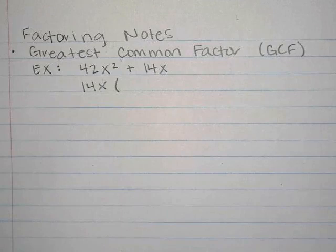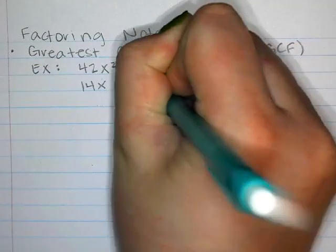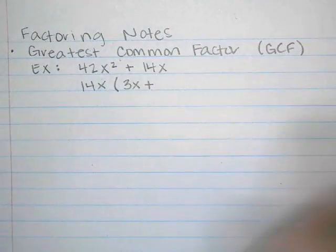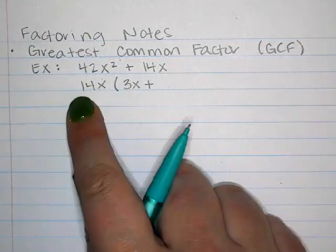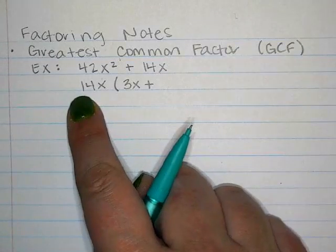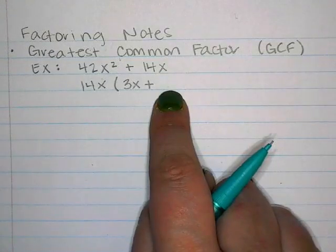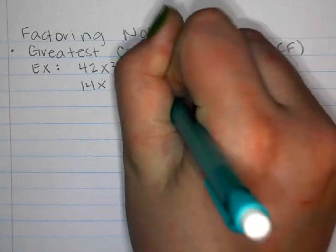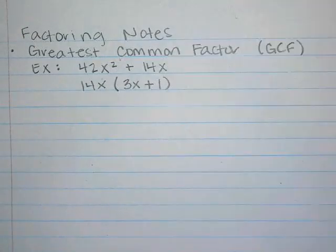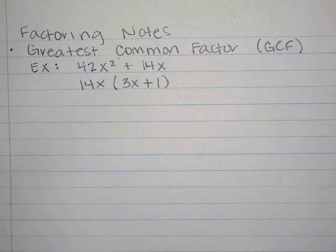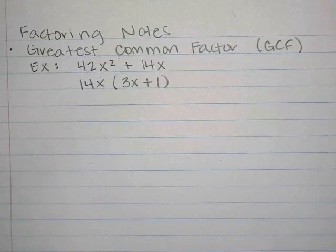We also have to take the x out. So 42 divided by 14 is 3, giving us 3x. And then 14x divided by 14x leaves us with 1. So we factor out 14x and get 14x times (3x + 1). That's how we factor by taking out a GCF.